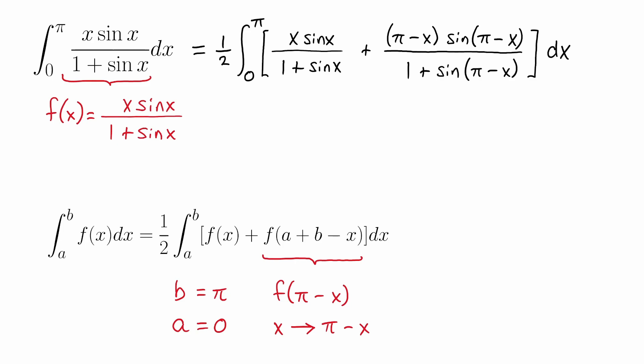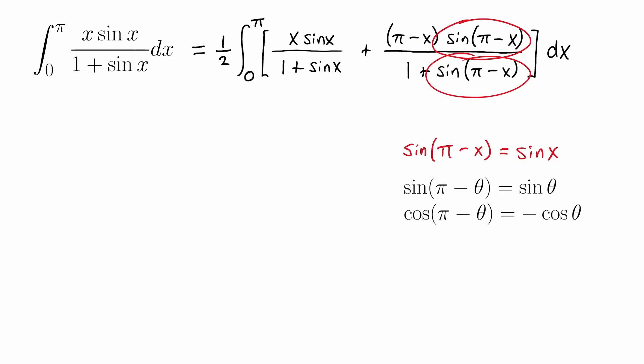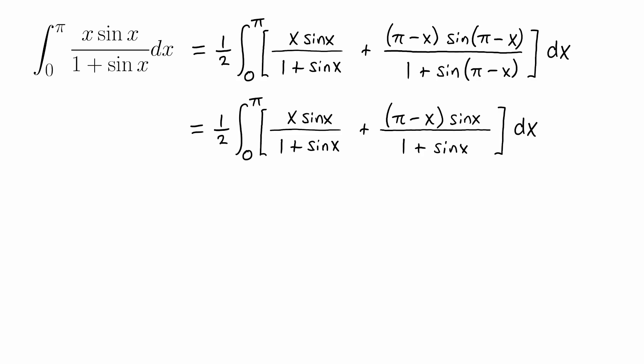The rest of the problem is just simplifying this. We can apply one of our trick identities and replace both of those terms, sine of pi minus x, with just sine of x. We can notice that we have a common denominator, so we can combine these two fractions into a single one. Distributing sine of x through the parentheses in the numerator, we can get the x times sine of x terms to cancel out. We'll be left with one half times the integral from zero to pi, simplifying to a single fraction with numerator pi times sine of x, all over 1 plus sine of x.